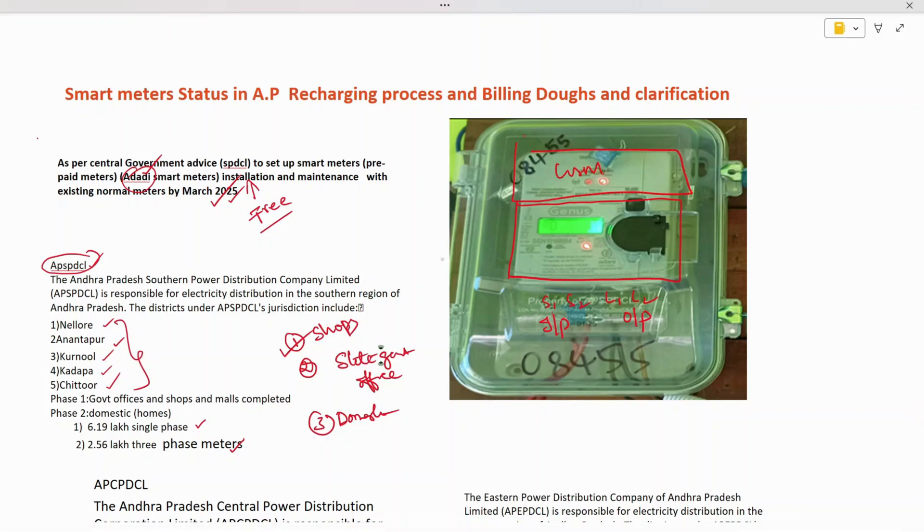This is the GSM module-based data transmission. Here we have a SIM card inside which consists of an IMEI number, through which the data gets transmitted. To rectify problems or update software, there's an MSIM and a slot provided which is useful to update customer data.